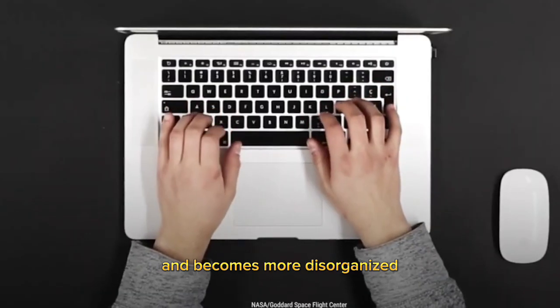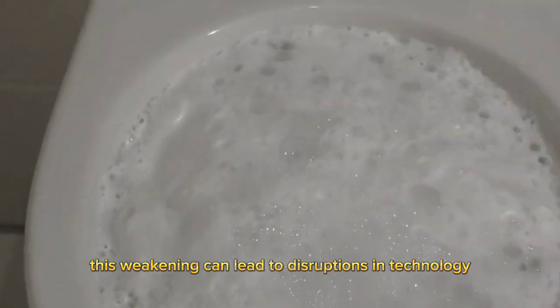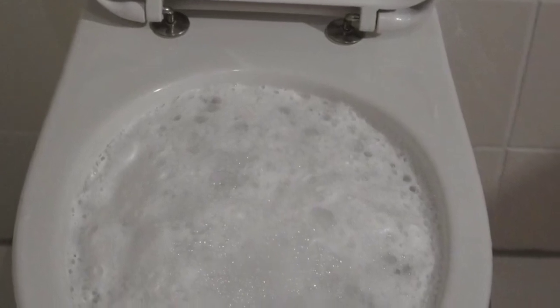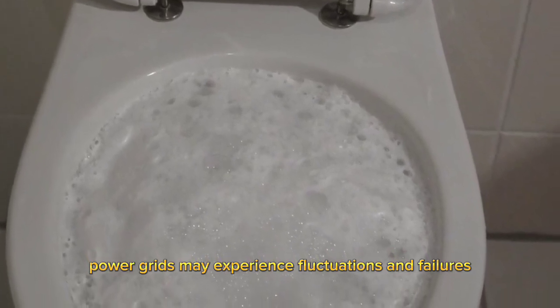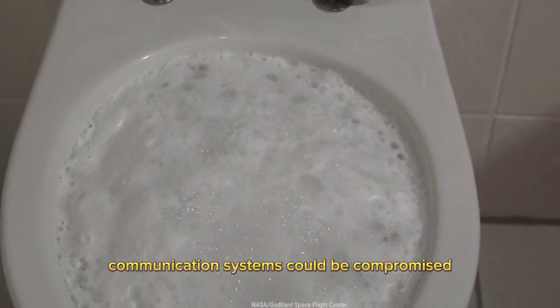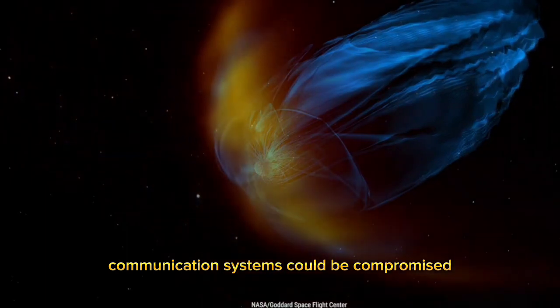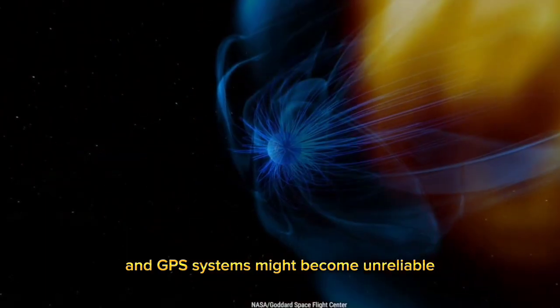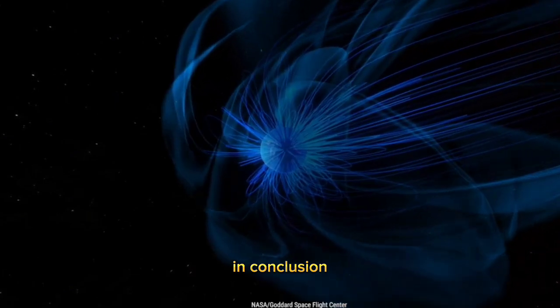During a pole reversal, the magnetic field weakens and becomes more disorganized. This weakening can lead to disruptions in technology. Power grids may experience fluctuations and failures, communication systems could be compromised, and GPS systems might become unreliable.